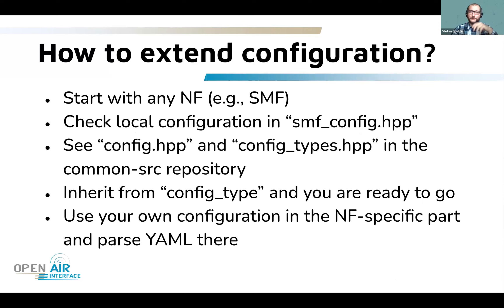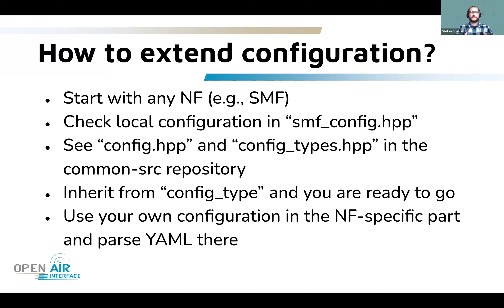If you want to contribute and extend the configuration, start with any network function such as the SMF. Check the SMF config file — it's still there. Then go to the common source repository, which is included as a Git submodule. There you will find the config and config types, which form the framework. You don't need to understand everything — just inherit from config_type, implement the required functions, hook the configuration into the existing code, and call the from_yaml method.